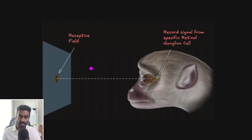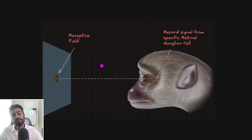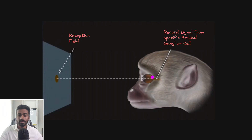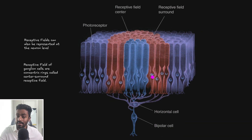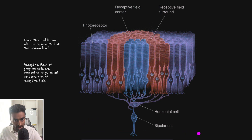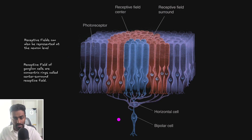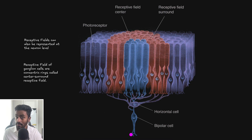That's one way to look at a receptive field. In another case, the receptive field could be neurons too. If we take a part of the retina and blow it up, we might get something like this. The front of the retina, the back of the retina, photoreceptors, a bipolar cell, and horizontal cells. The bipolar cell is going to be connected to the cell we want to study — the retinal ganglion cell.